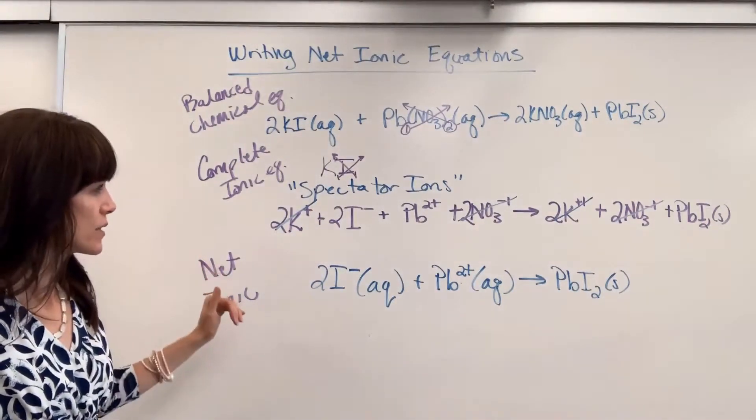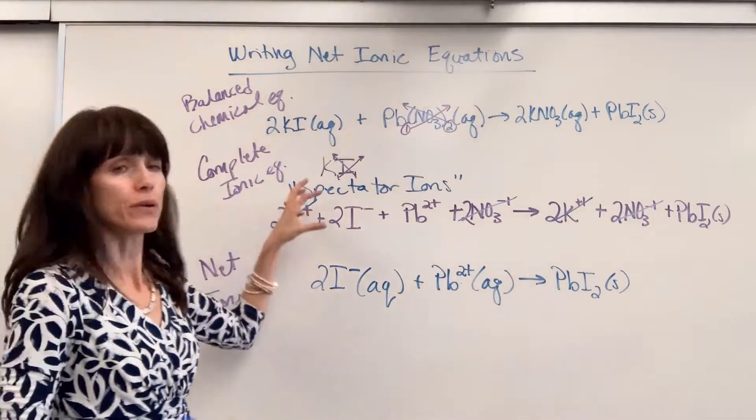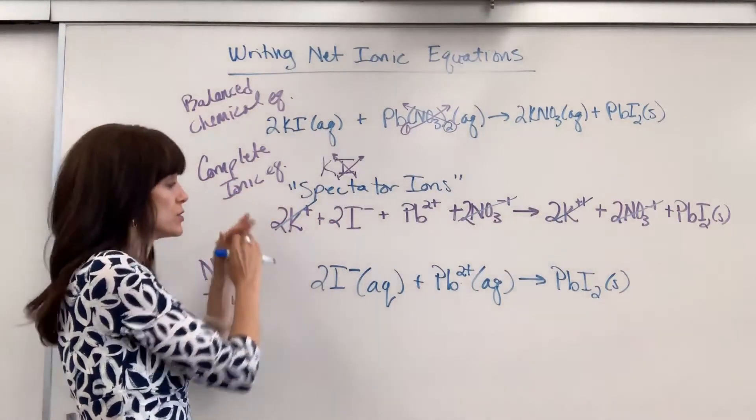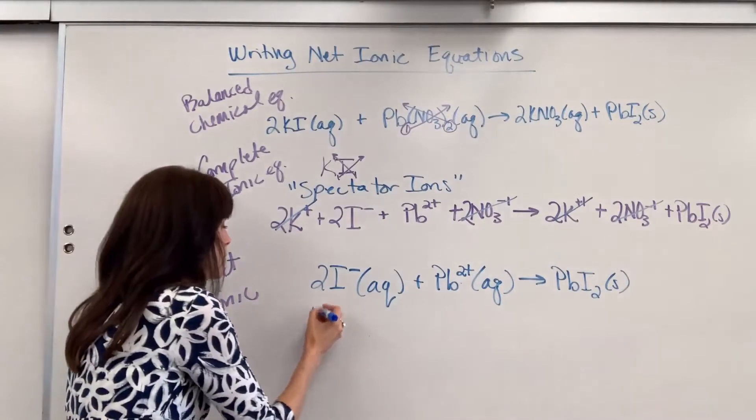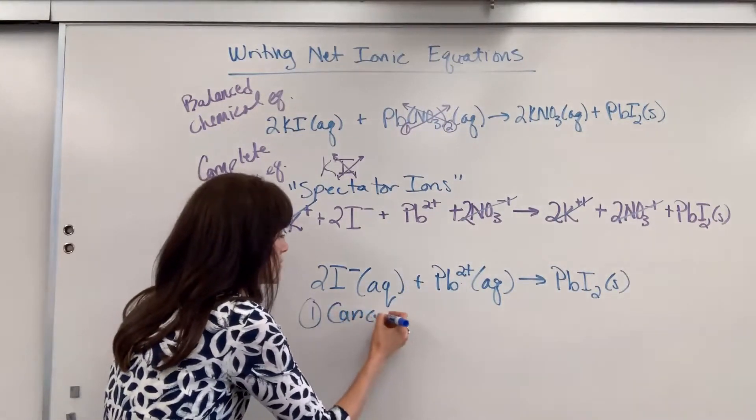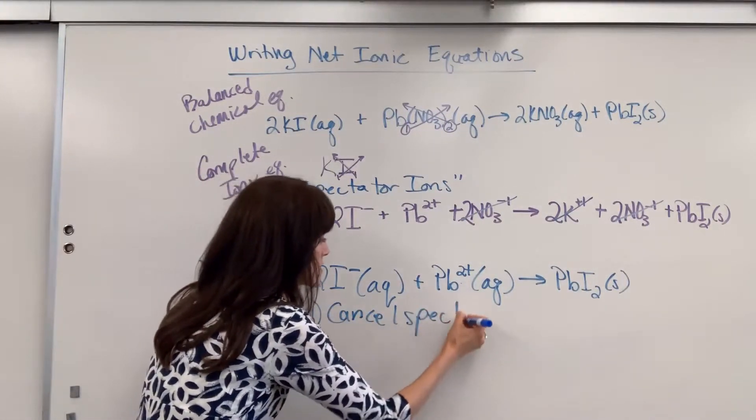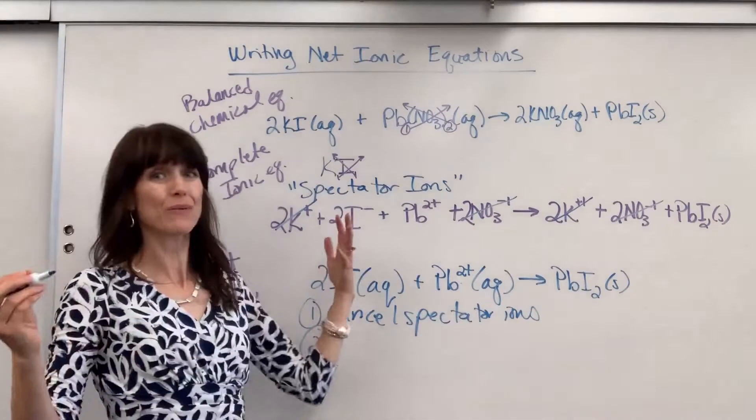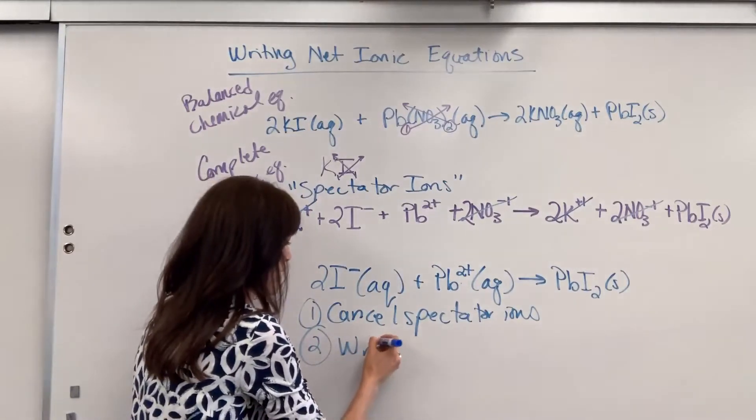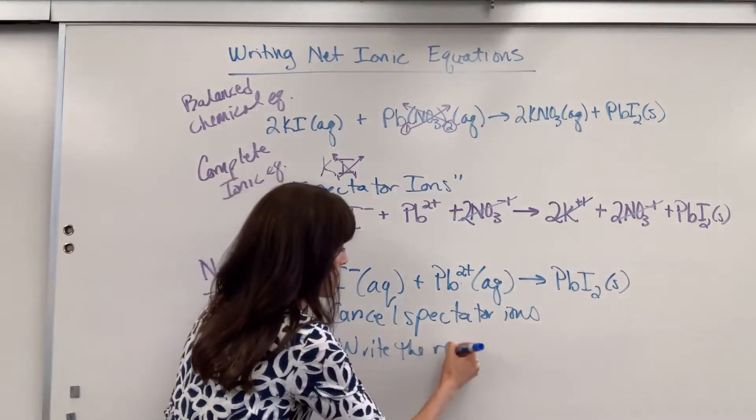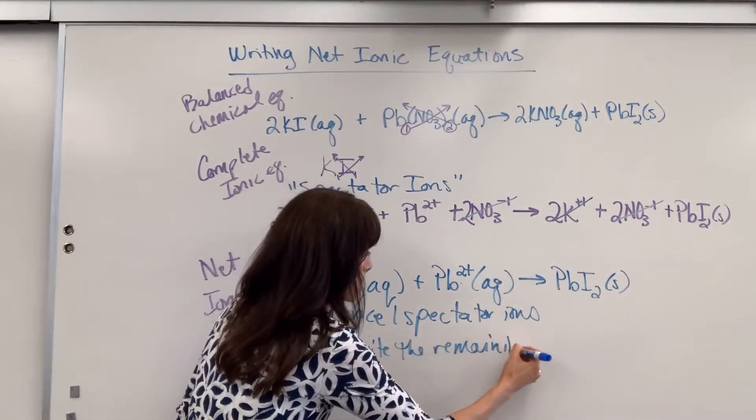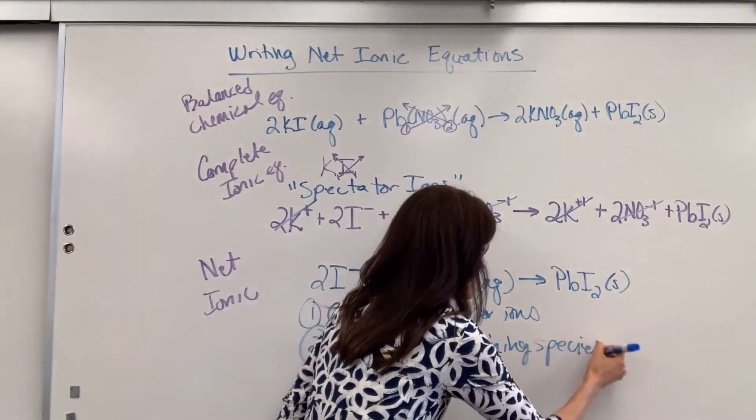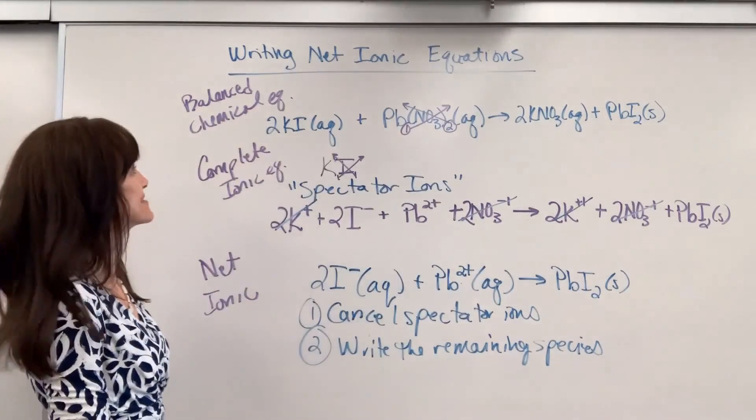I want to write down the steps as a reminder how to go from the complete ionic to the net ionic. So number one, you're going to cancel spectator ions. And then number two, you just write what's remaining, the remaining species. Be careful. Add those phases back in.